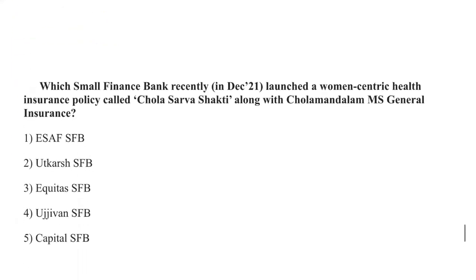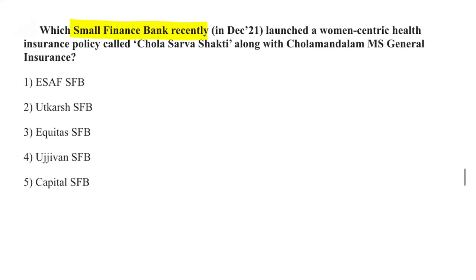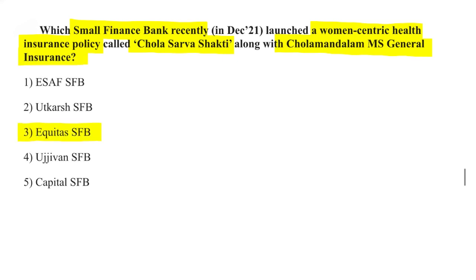Equitas Small Finance Bank launched a women-centric health insurance policy called Chola Sarva Shakti, along with Cholamandalam MS General Insurance. The bank was established in 2016, its headquarters is in Chennai, Tamil Nadu, and its MD and CEO is Vasudevan P.N.